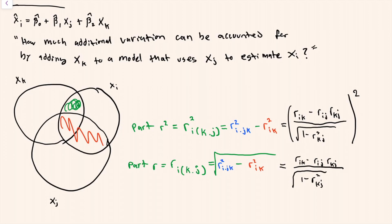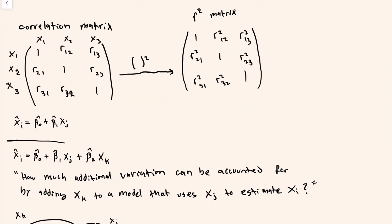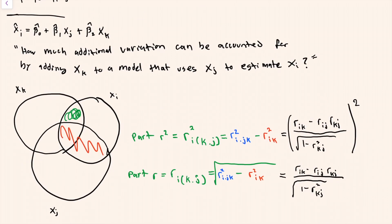For example, if i was 3 and j was 2, then we could look back at these correlation matrices to figure out which values to plug into these formulas to get the part correlation. In another video I talk about partial correlations and compare them to part correlations.